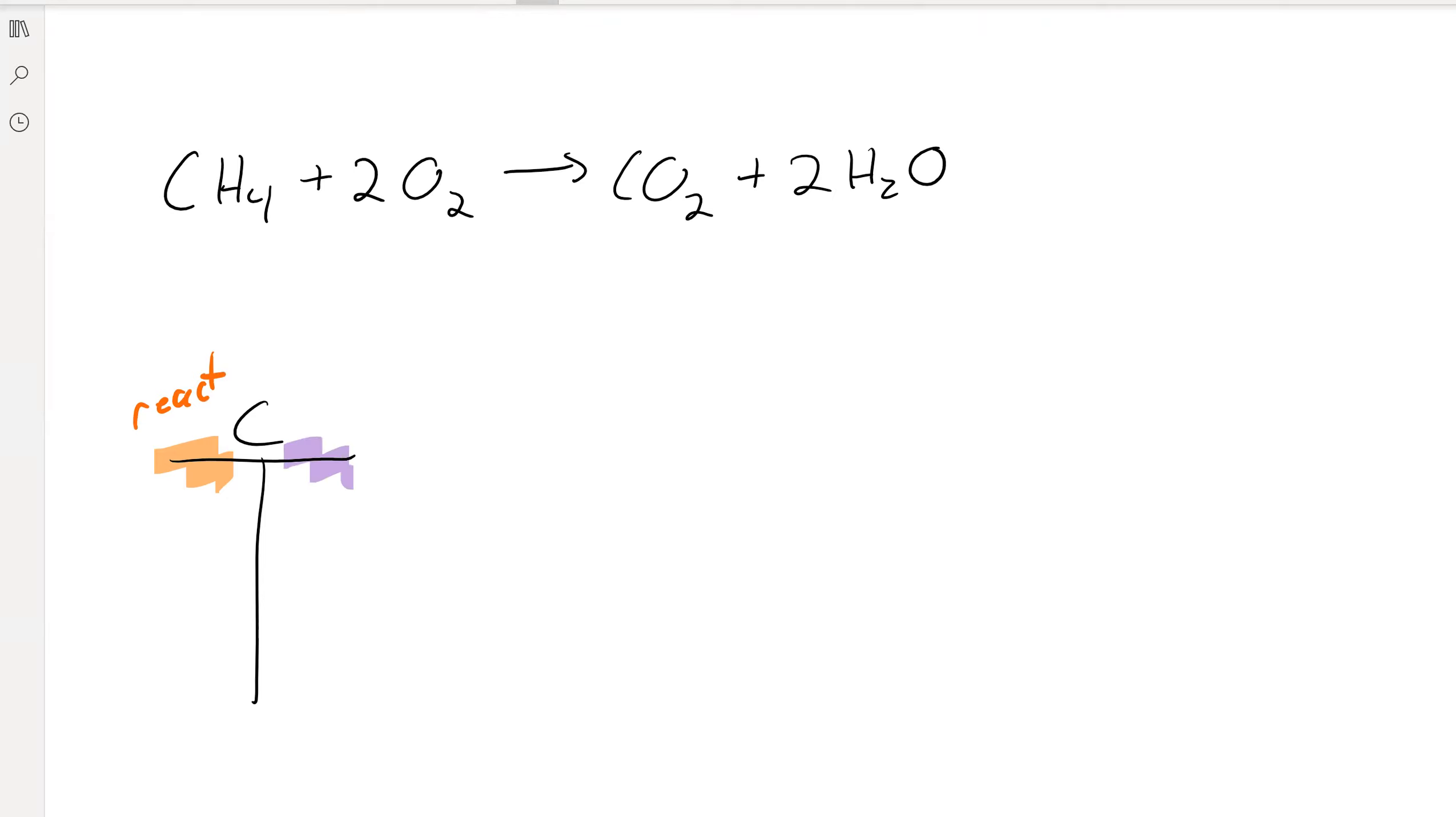And then on the right side, I'll be talking about the products. And then we just look through our chemical equation and see which elements we have. We have the carbon, we've got the hydrogen, and we've got the oxygen. Those are the only three elements here.